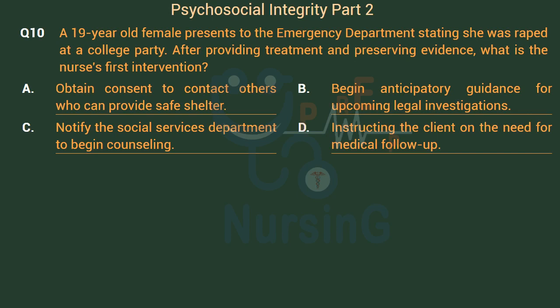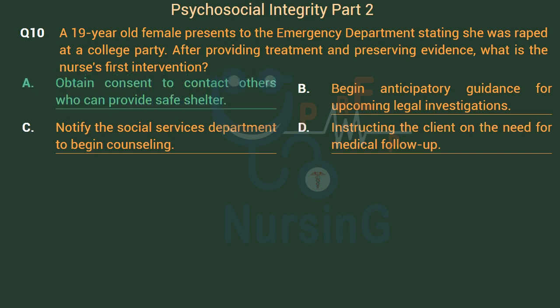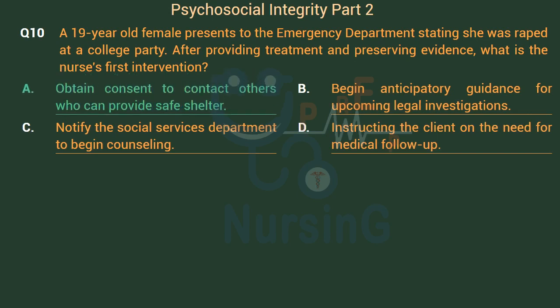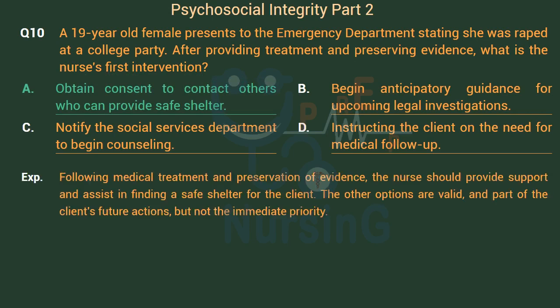The right answer is Option A: Obtain consent to contact others who can provide safe shelter. Following medical treatment and preservation of evidence, the nurse should provide support and assist in finding a safe shelter for the client. The other options are valid and part of the client's future actions, but not the immediate priority.